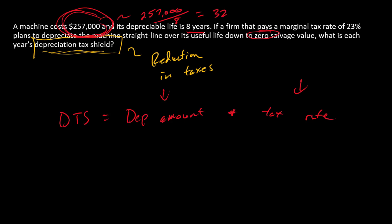So that's $32,125 per year. That is going to go in right there. We have $32,125 and we're going to multiply that by what? Tax rate of 23%. So multiply by 0.23.